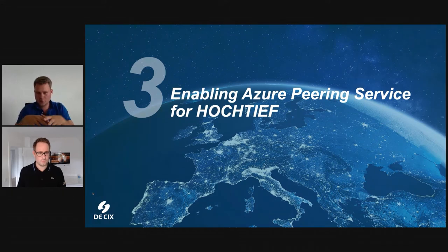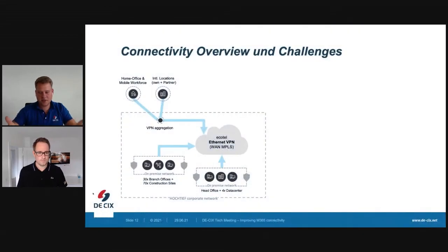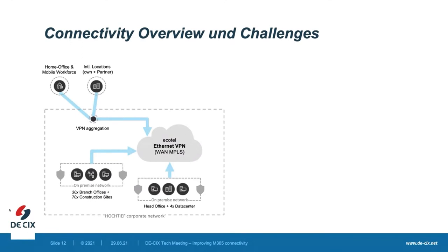We want to look at the Hochtief corporate network — how the connectivity looked and how we implemented the Azure Peering Service. On the bottom left we see the Hochtief corporate network provided by Ecotel's Ethernet VPN product, including the headquarter office in Germany, four on-prem data centers spread across Germany, over 30 branch sites and 17 construction sites, all aggregated by the Ecotel MPLS or Ethernet VPN product. We also have home office users — heavily used over the last year and a half due to Corona — and a large mobile workforce connecting via site-to-site VPN.